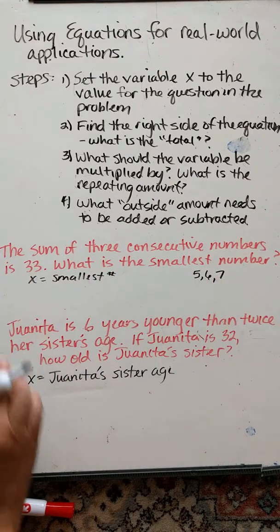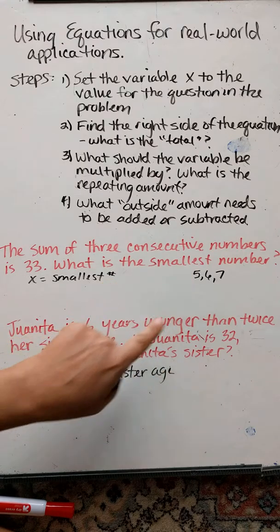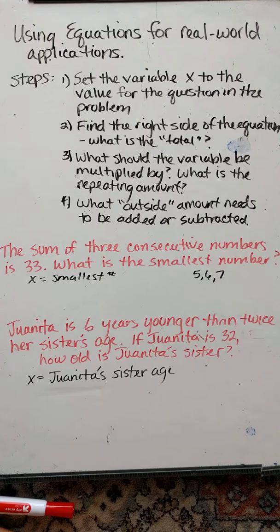In our equation, of course, we're looking for 33. So one thing we have to do is we have to somehow represent these three numbers using x. If x is the smallest number, that would be like, say, the 5.